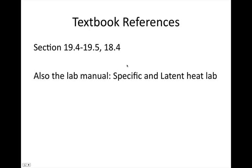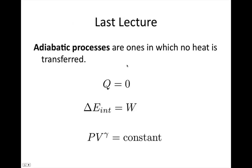A lot of this is also covered in your lab manual in the specific and latent heat lab. Last lecture, we had a look at adiabatic processes — ones in which no heat is transferred, so Q equals 0. The first law of thermodynamics then becomes that the change in internal energy equals the work done, and PV to the gamma is constant, where gamma is Cp over Cv.